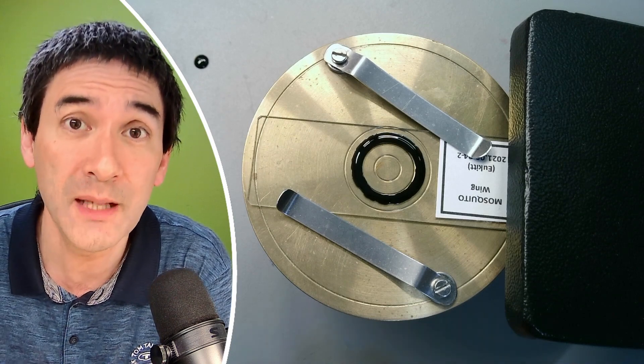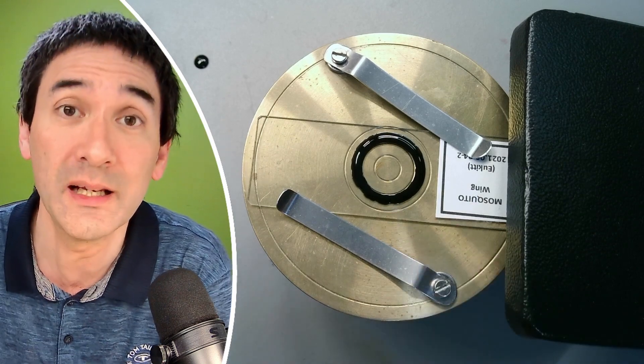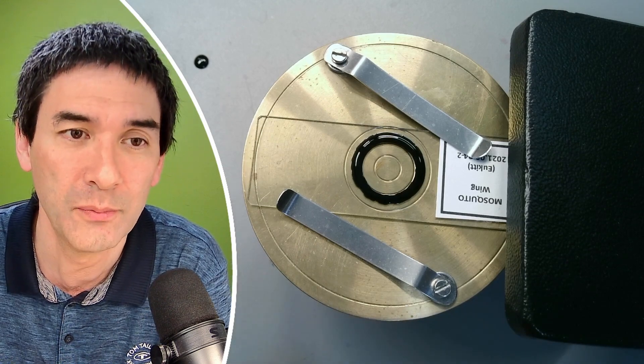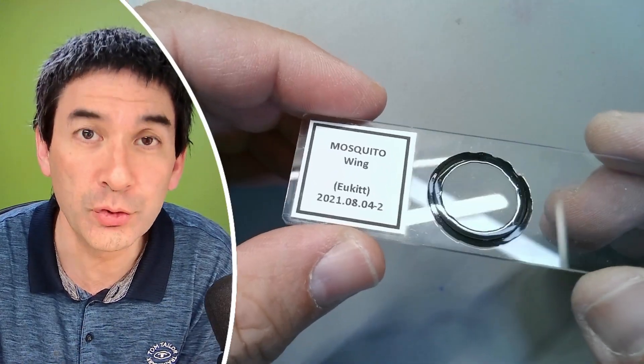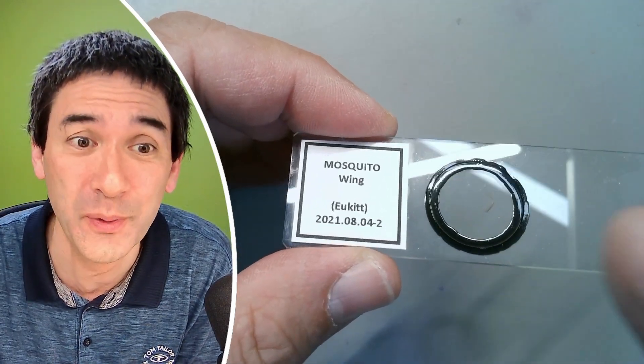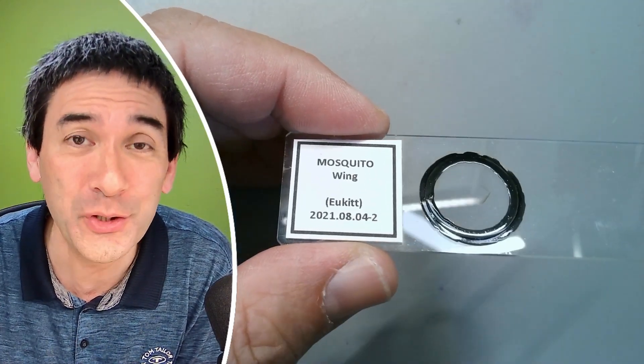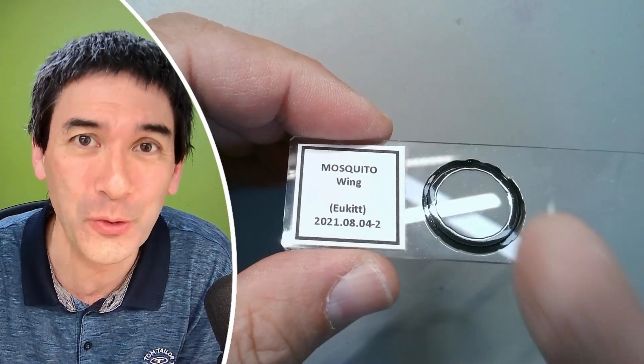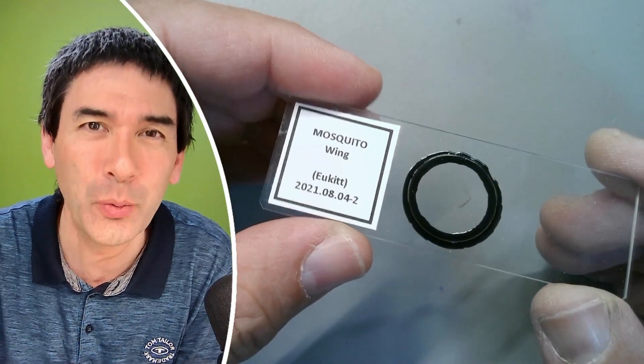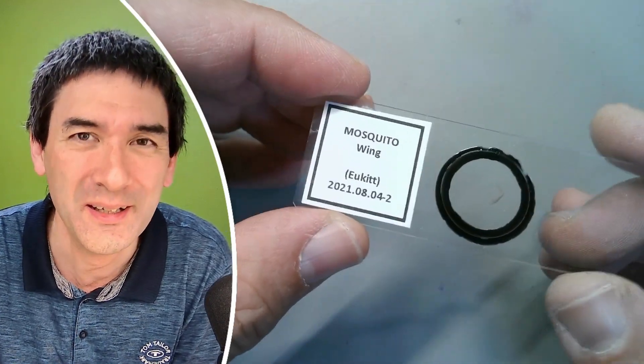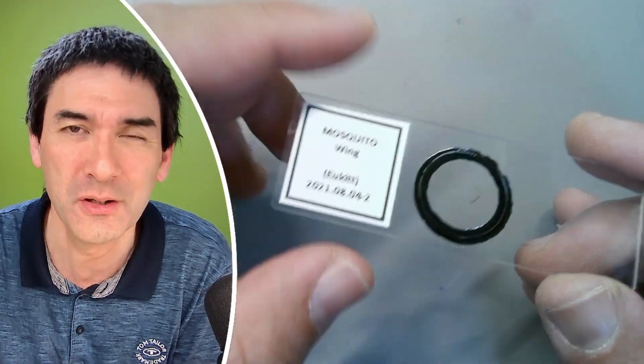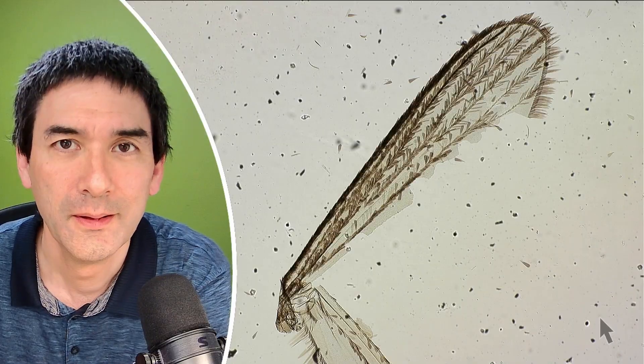So the nail polish is now dry, so I can put it under the microscope. Always be careful. Never put slides with liquid nail polish under the microscope. Otherwise, there's the danger of getting some of the nail polish on your microscope objective. Let's have a quick look if the mosquito wing, of course, still looks nice even after four years. I don't see a reason why not.